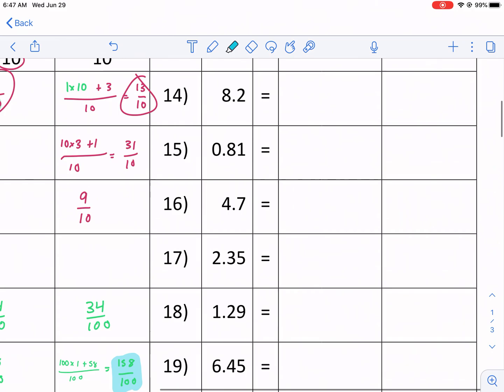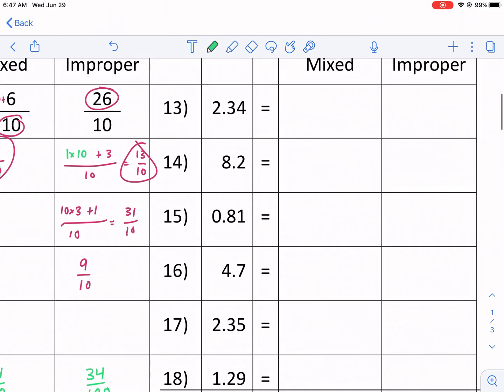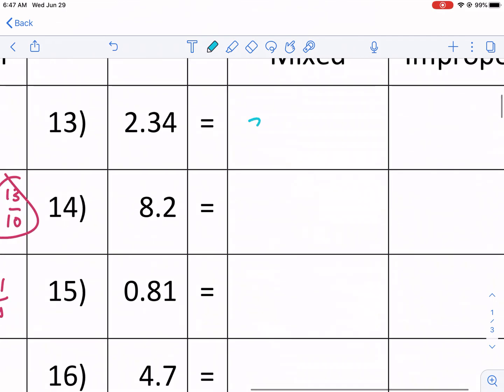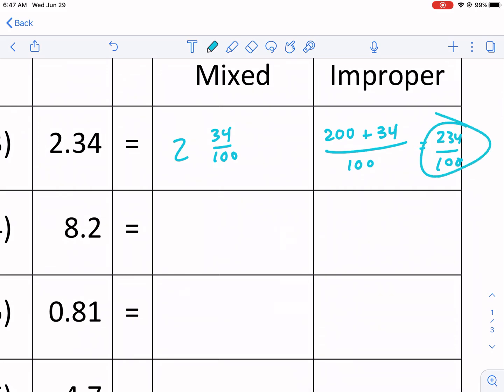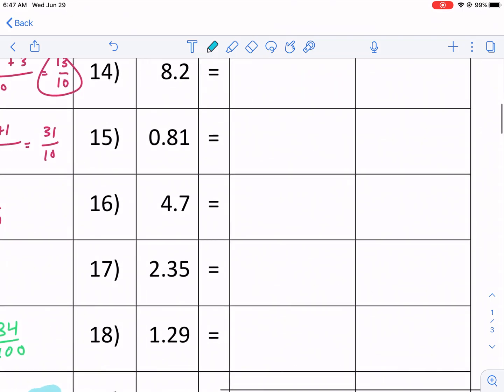So if you want to jump over to the second column, we have some mixed ones with two digits and one digit. So we have this one, we have two and 34 out of 100. Hope you're picking up the pattern here that I multiply the 100 times the two, that's 200, and then we have that 34 that we need to add. And that gives us 234 out of 100. If you were to do this division, by the way, 234 divided by 100, you would get this number 2.34. That's why it's an equivalent fraction. Everything is related.